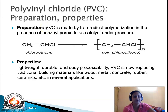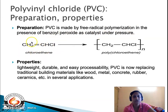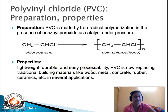Two typical plastic examples are polyvinyl chloride and bakelite. PVC is formed by addition polymerization and bakelite by condensation polymerization. PVC is prepared from chloroethene (vinyl chloride) via free-radical polymerization in the presence of benzoyl peroxide as catalyst under pressure. Because of the double bond it undergoes addition polymerization to give polyvinyl chloride. PVC is lightweight, durable, and easily processed, and is now replacing traditional building materials like wood, metal, concrete, rubber, and ceramics in several applications.